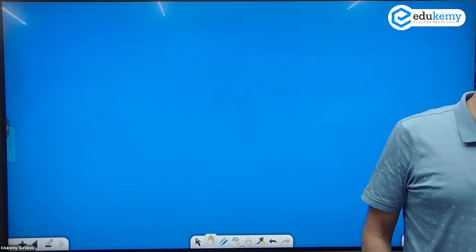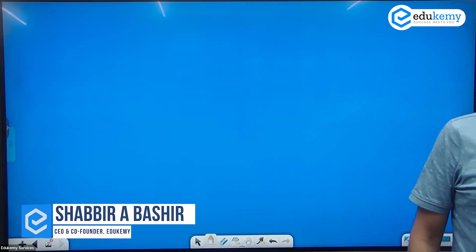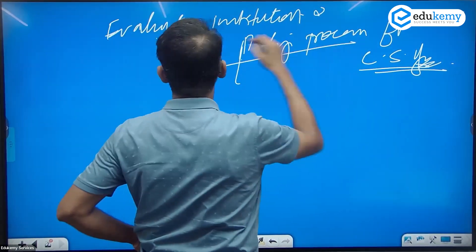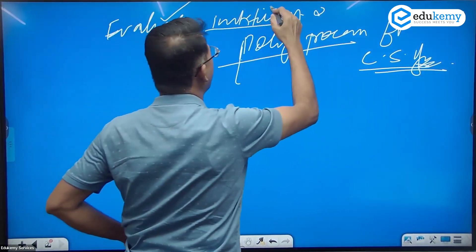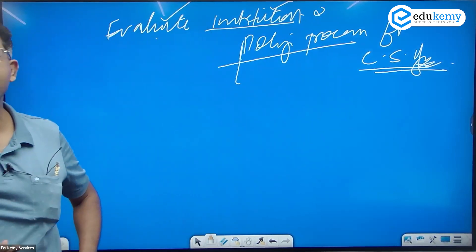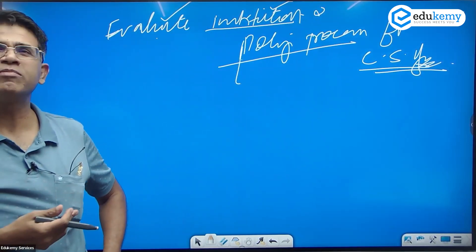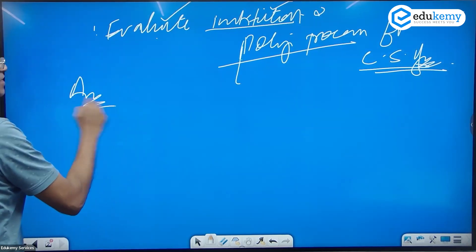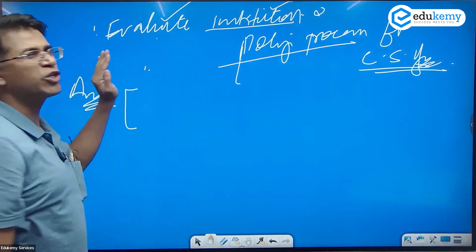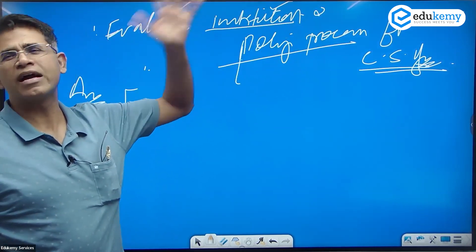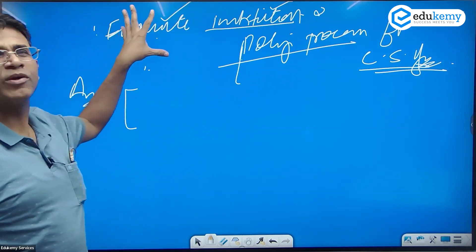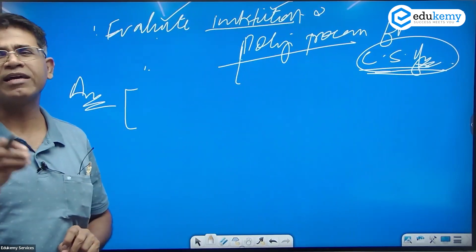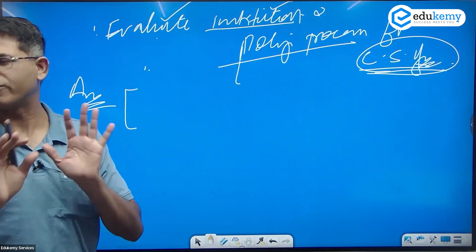Evaluate the institutional and policy processes for climate smart agriculture. Tell us, are the institutions good or bad, effective or not? So when a question stumps you, start with whatever is familiar to you.